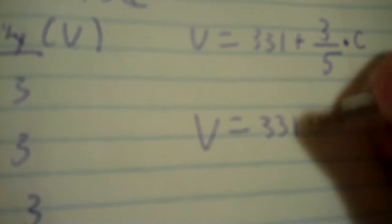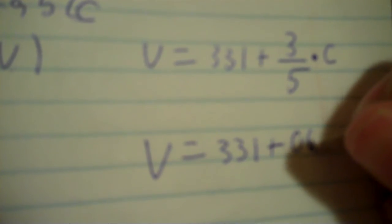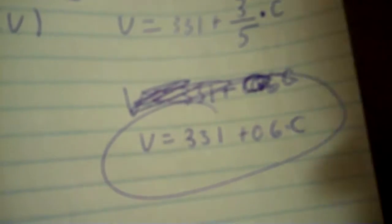So I get 331 plus 3 divided by 5, which is 0.6. The equation is V = 331 + 0.6 × C. If you're not sure about your answer, punch it in: 331 + 0.6 × 10 should be 337 — it is. And 331 + 0.6 × 15 should be 340 — it is. That's the equation for the table.